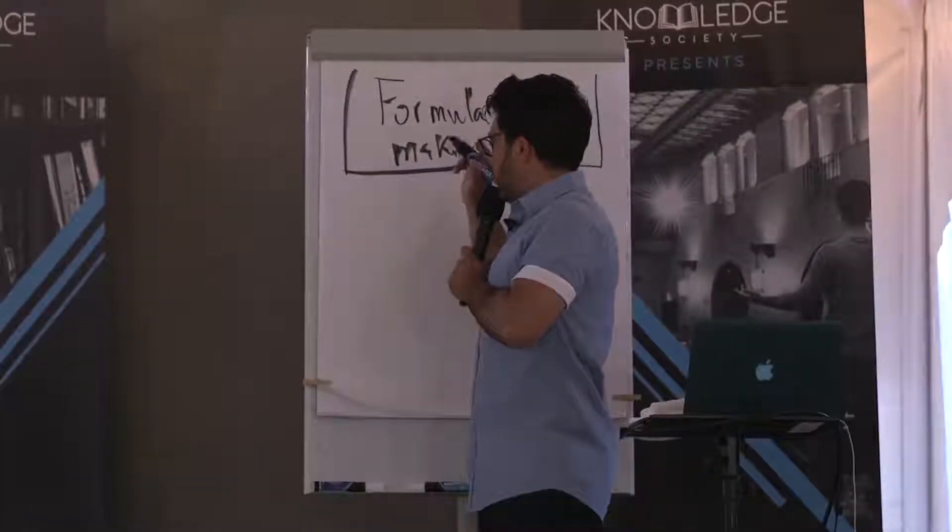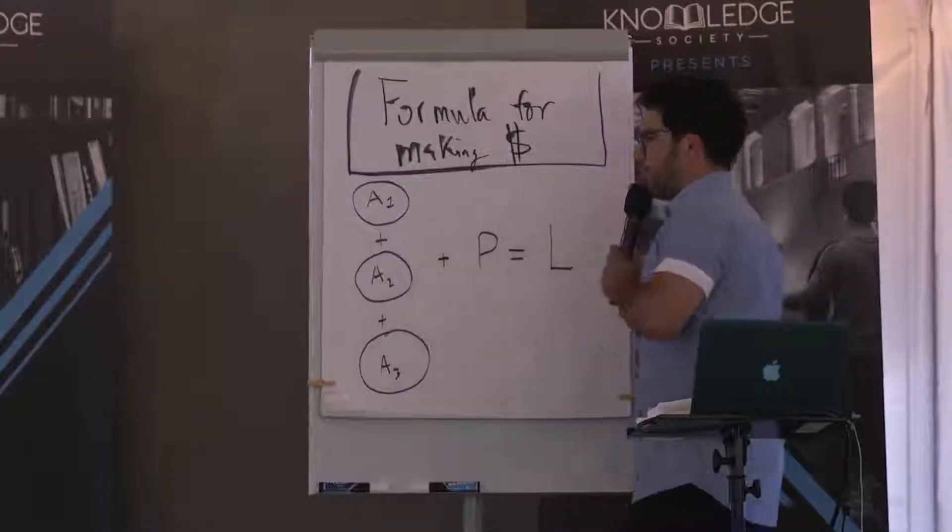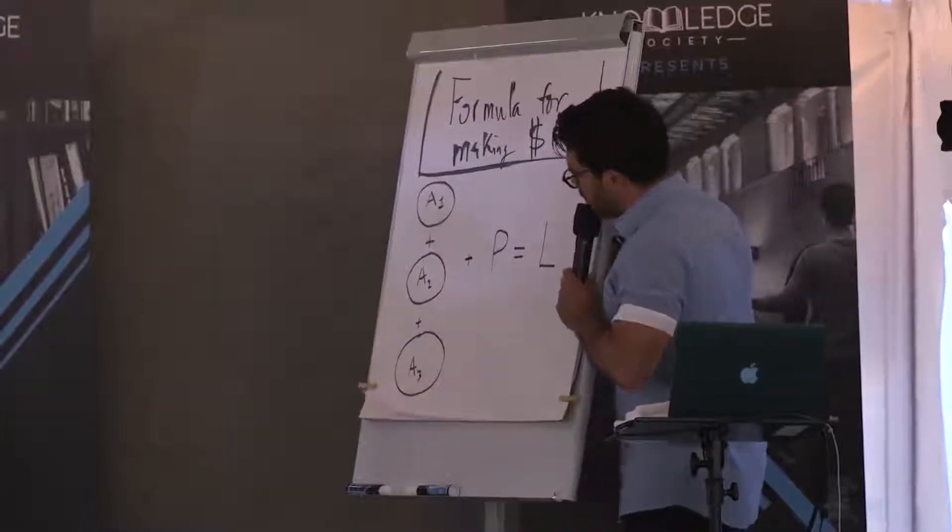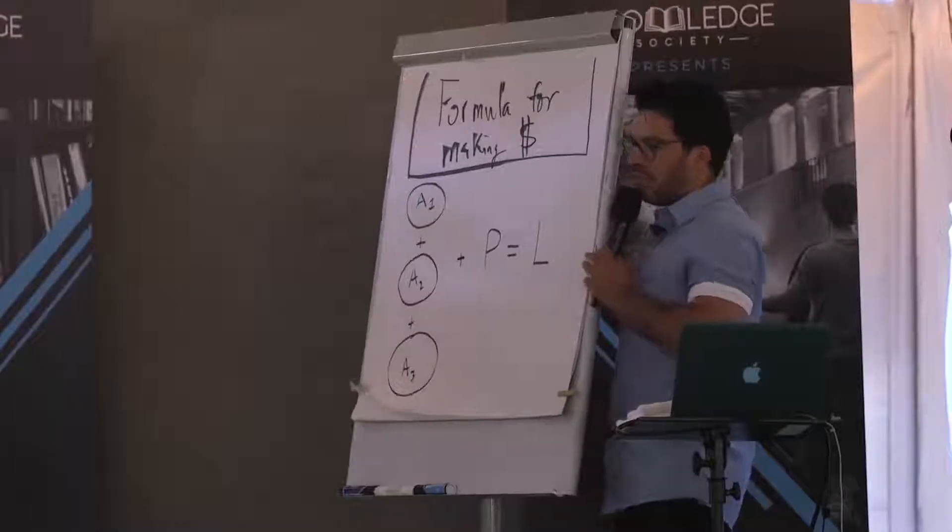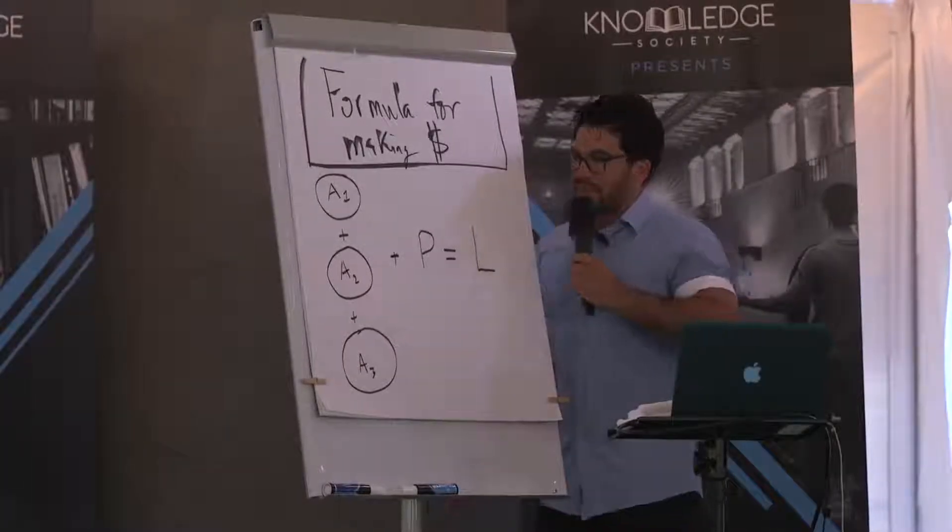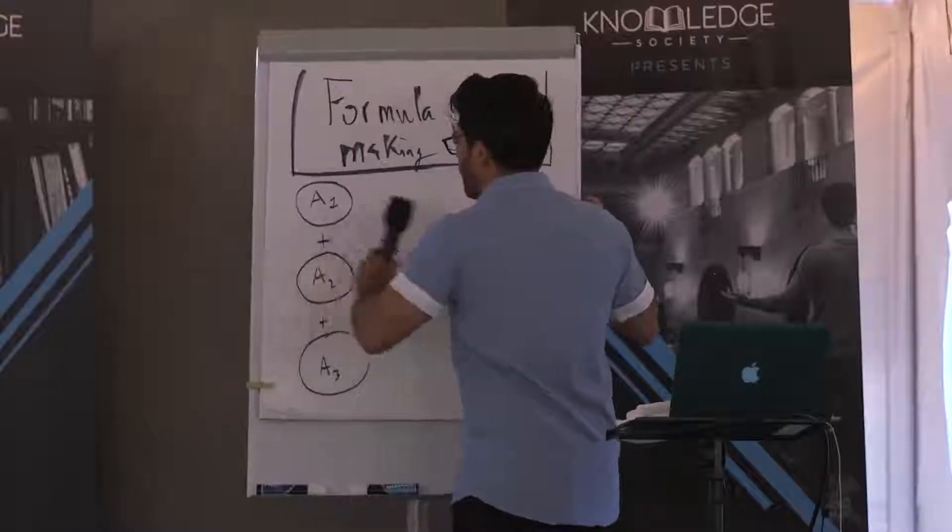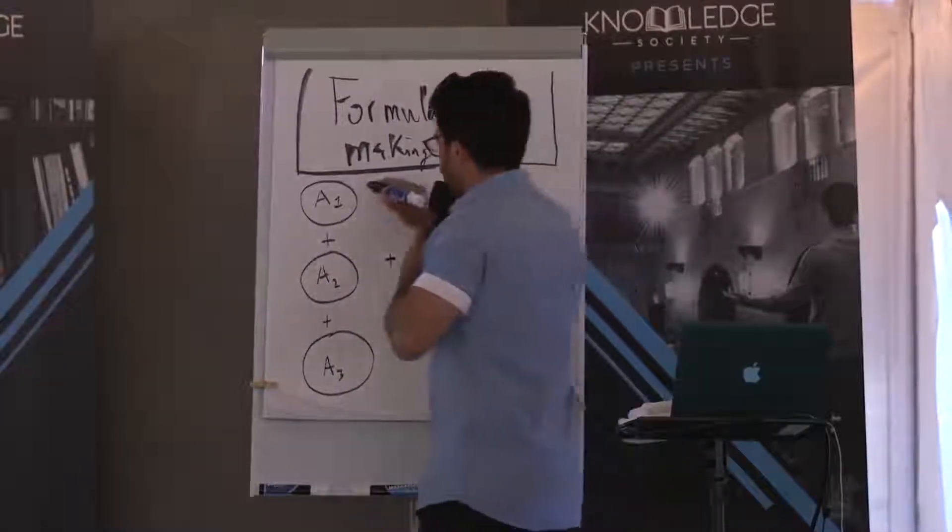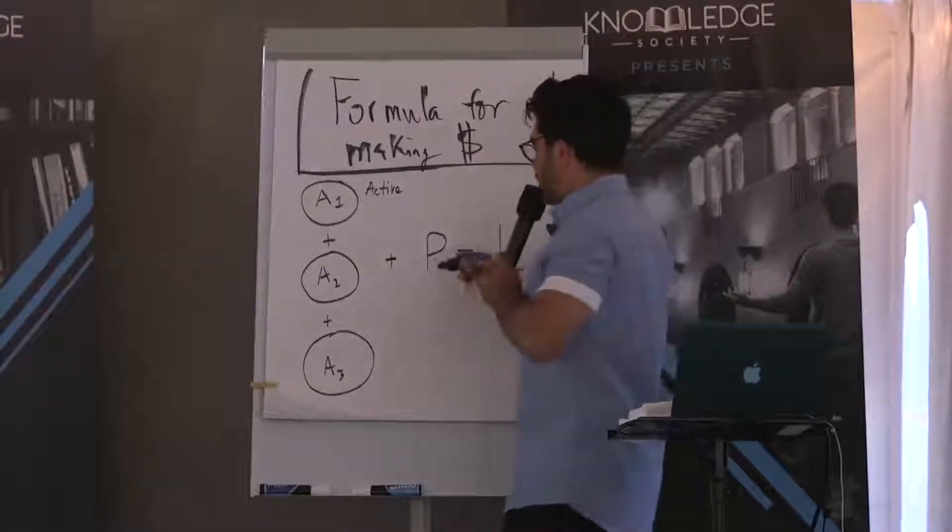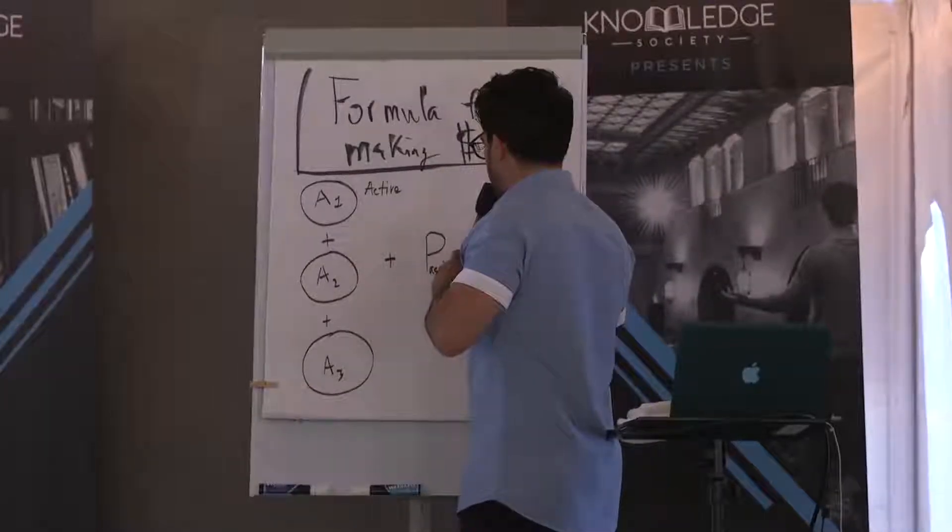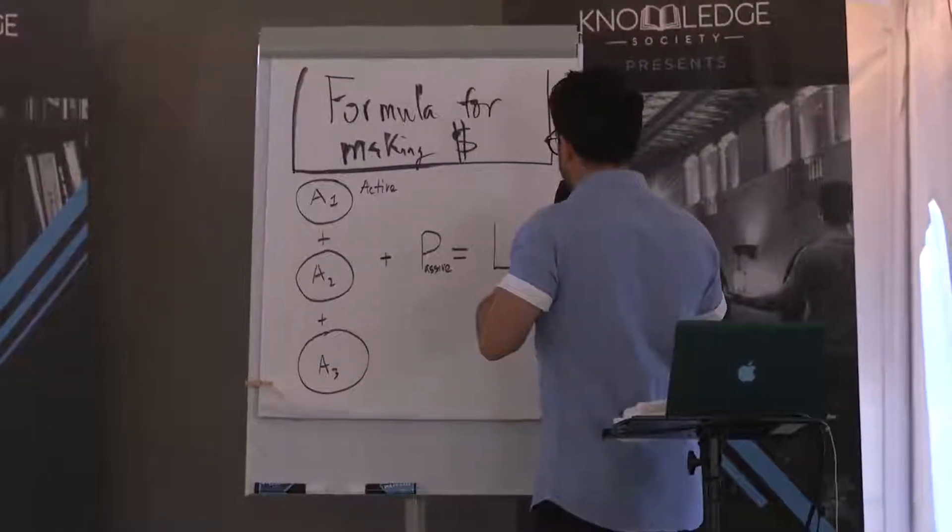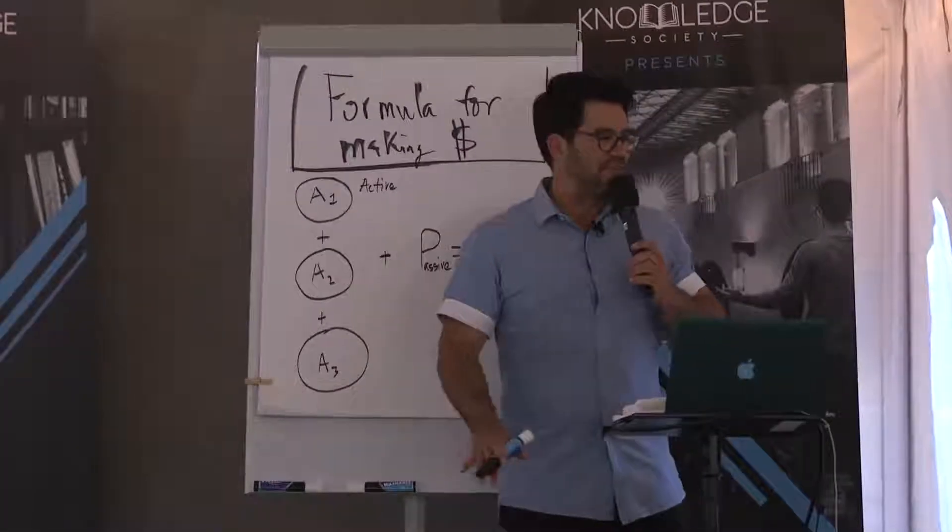So here's the big picture formula. You can write this down. So let me point that in case you can't see. You got A1 plus A2 plus A3. Then you add on top of that P and that gives you L. All right. This way. Everybody got it? Now there's something about this math formula that's different than the average math formula.